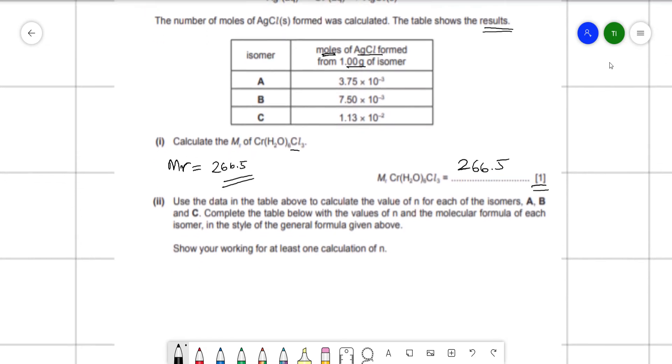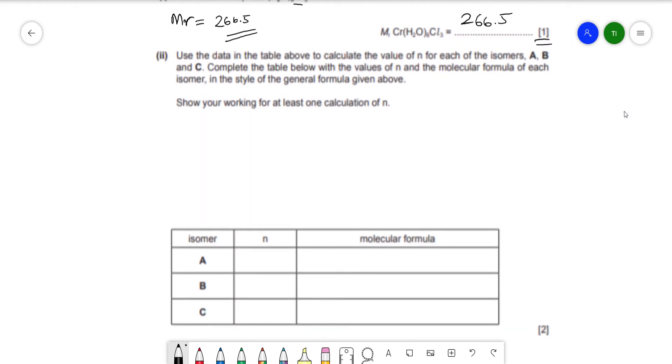Now is the next question that was really confusing for most candidates. The table wasn't that confusing, but it's the working that was confusing. So use the data in the table above to calculate the value of N for each of the isomers A, B, and C. Complete the table with the values of N and the molecular formula for each isomer in the style of general formula given above. And show your working for at least one calculation of N. So I'll write down the general formula on the right here so that it helps me out in the workings. Before the working, it's easier to fill the table, so it's better to first fill the table and then go on to the working.